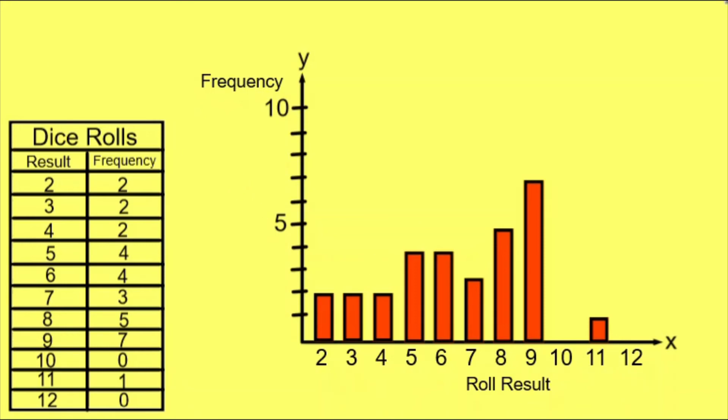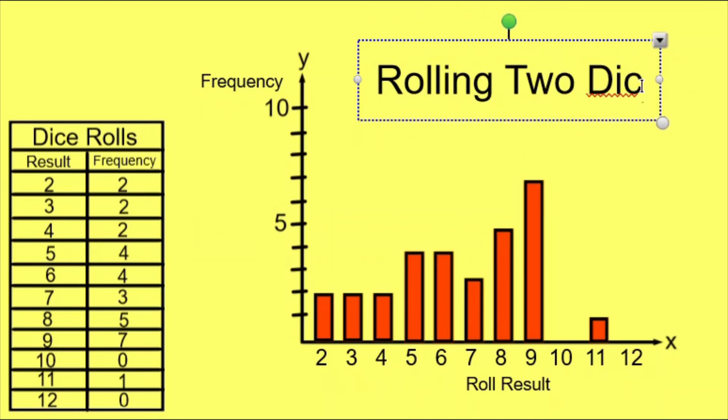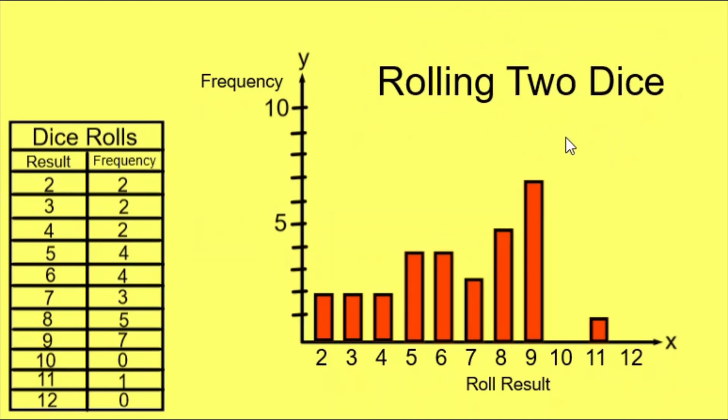The only thing that's missing here is a title. I'm going to call this bar graph Rolling Two Dice. Now our bar graph is complete.